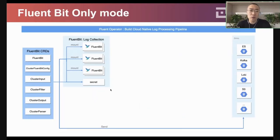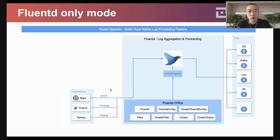Users can also deploy a Flimbit DaemonSet only — use Flimbit to collect logs, do some simple processing, and forward to the final destination. A user can also deploy Flimbit only, where Flimbit receives logs from the network through the HTTP forward or syslog plugin, does some advanced processing, and forwards to final destinations.